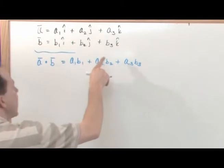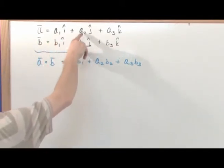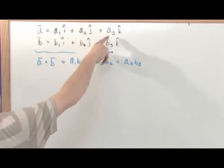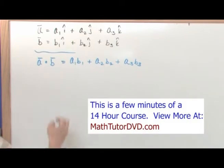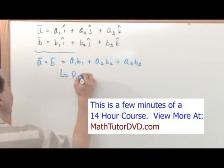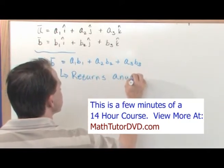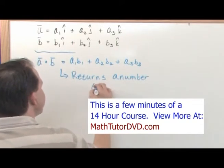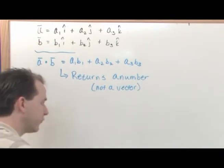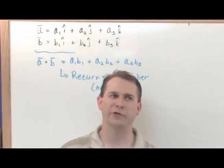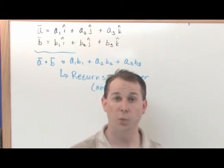Notice I don't have any i's, j's, or k's here. I've got a number: a₁ times b₁, a number a₂ times b₂, a number a₃ times b₃. I add them all together and I'm getting a number back — not a vector. So the dot product always returns a number, not a vector. That should raise a question: why would you multiply two vectors together and never get a vector back?